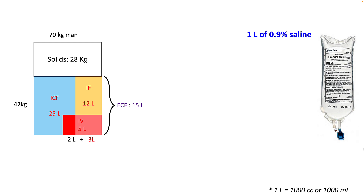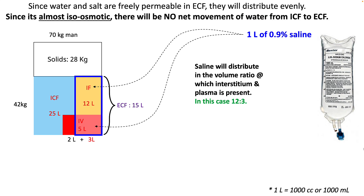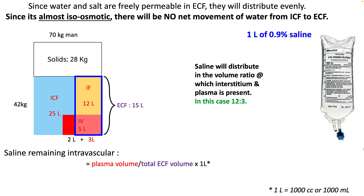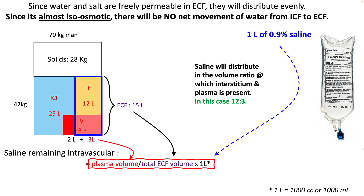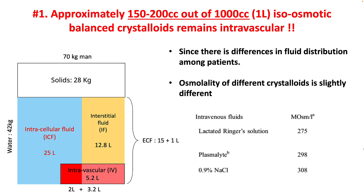So let's see how one liter of normal saline improves your intravascular status. Saline is distributed only in your extracellular compartment, so it distributes evenly in your ECF between the interstitium and intravascular space — in a ratio of 12 to 3. Since it is almost iso-osmotic, there will be no net movement of water from ICF to ECF. So the amount of saline remaining intravascular equals plasma volume divided by total ECF volume, giving you around 200 cc. Approximately 150 to 200 cc out of a liter of isosmotic balanced crystalloid remains intravascular.